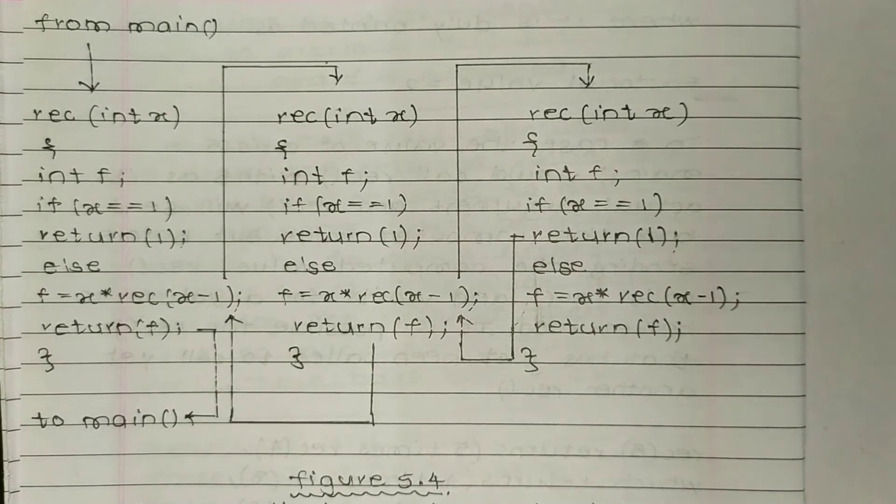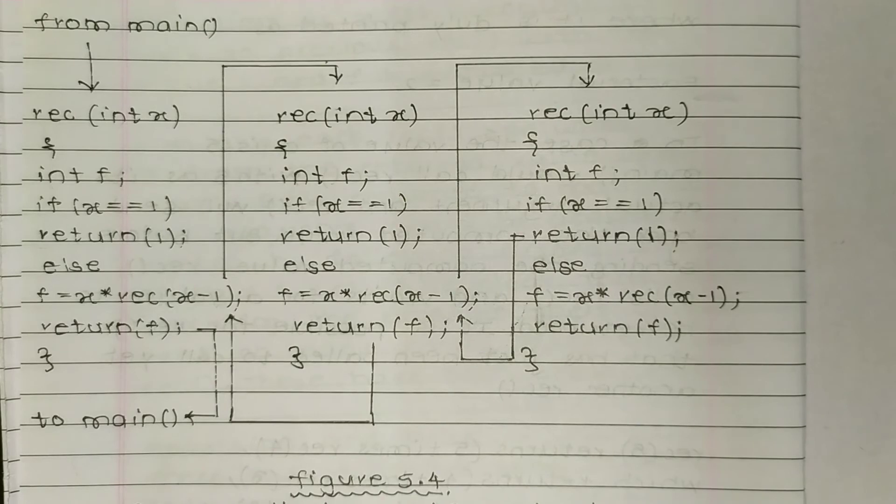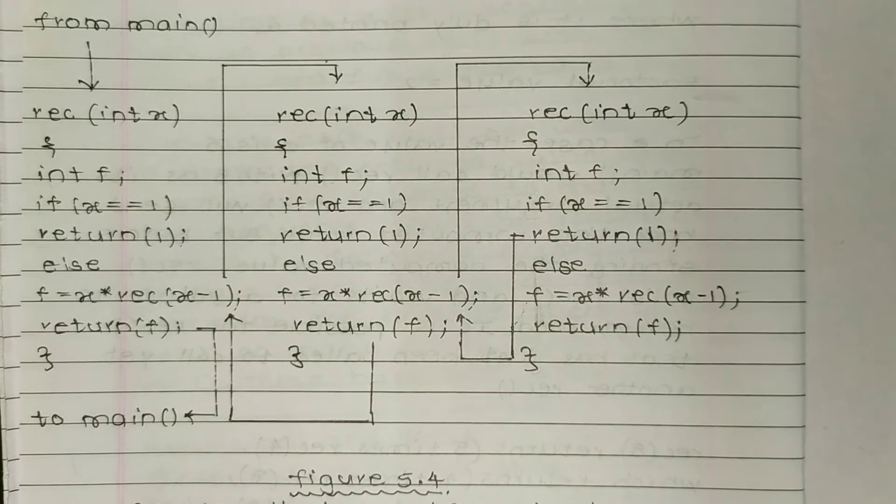Since x is still not equal to 1, rec(2) is not equal to 1. The if condition is checked again: x is equal to 1? 2 is not equal to 1, so rec is called another time. The else statement is carried out again.